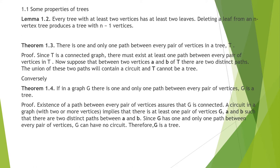The second property is: there is one and only one path between every pair of vertices in a tree T. The proof is: since T is a connected graph, there must exist at least one path between every pair of vertices in T. Now suppose that between any two vertices A and B of tree T there are 2 distinct paths. The union of these 2 paths will contain a circuit, which implies T cannot be a tree — a contradiction.